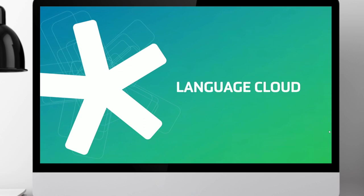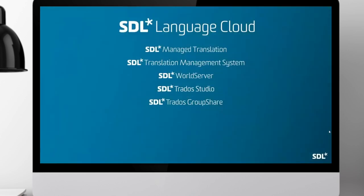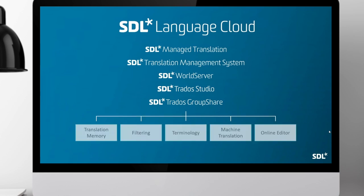Finally, a few slides on SDL Language Cloud. Today, Language Cloud is already providing key functionality used by existing products — SDL Managed Translation, TMS, World Server, Studio, and GroupShare — including translation memory, filtering, terminology, machine translation, and the online editor. But going forward, Language Cloud will be much more than just a hosting place for these capabilities. It will have its own user interface, user experience, and features and functionality, implementing capabilities in line with what exists today in SDL Managed Translation, SDL TMS, and SDL World Server.